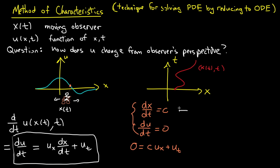Well, it means that the moving observer is moving at a constant speed of c. So moving with speed c. Just like I was in the last video, where I was watching the wave and moving along at a constant speed equal to the wave speed. What does du/dt equals 0 mean? It means that u is not changing. Notice that this is exactly the situation that I was describing in the previous video.